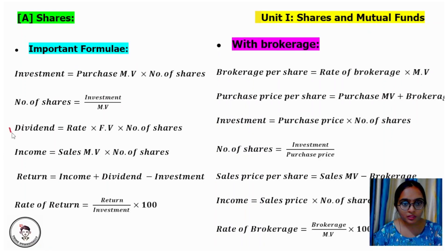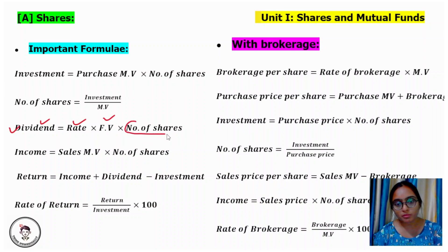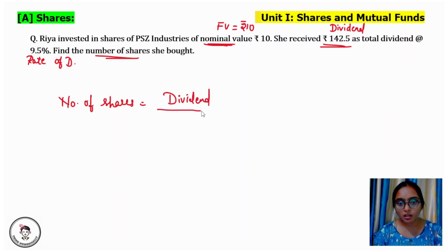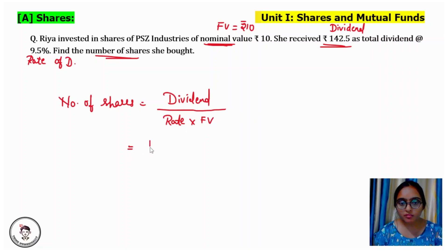Here we have the dividend formula: Dividend = rate of dividend × face value of shares. From this formula we can also find the number of shares. Number of shares = dividend ÷ (rate of dividend × face value). Now let's substitute the values. Dividend is given as 142.5.